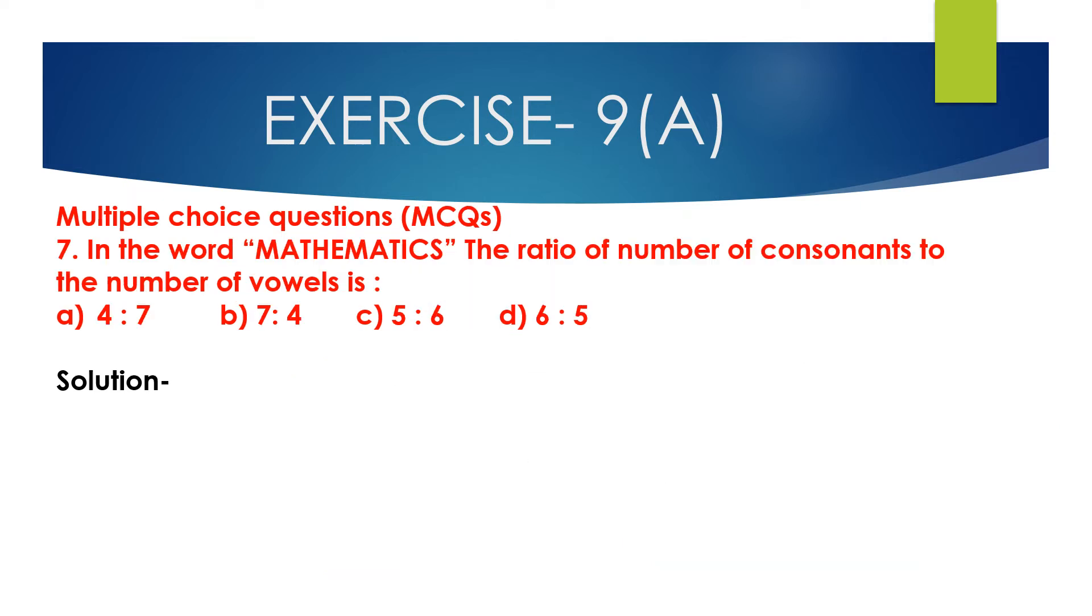Question 7: In the word MATHEMATICS, the ratio of number of consonants to the number of vowels is - the options are 4:7, 7:4, 5:6, 6:5. So total letters in the word mathematics is total alphabets or letters in mathematics.